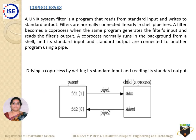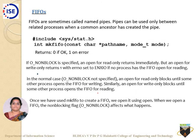Another IPC mechanism is coprocessors. A coprocessor is when the same program generates a filter's input and reads the filter's output using two pipes — pipe one and pipe two. It drives a coprocess by writing to its standard input and reading its standard output. fd[1] of one pipe is standard input, and fd[0] of another pipeline is used for reading.